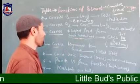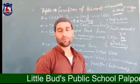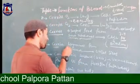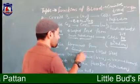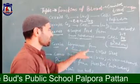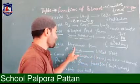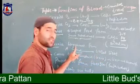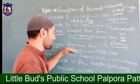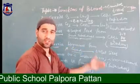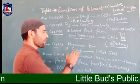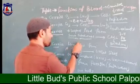Blood also carries hormones from the glands to the target sites. This is one more important role of blood, whether from endocrine glands or exocrine glands. Hormones are functional at the target site; where they are synthesized in our body, they are not yet functional. So for the functioning of hormones, blood carries them from the glands to the target site, where they influence physiological processes or play a specific role in the body.